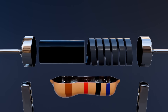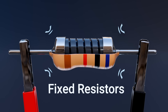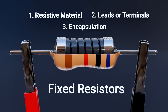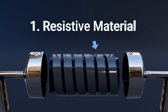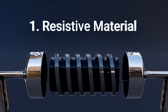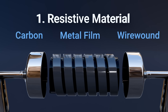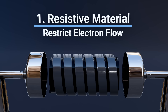Let's look at the parts of a resistor. Most common resistors you encounter are fixed resistors, which have three main components. Number one: resistive material. This is the core of the resistor and determines how much resistance it provides. It's made from materials like carbon, metal film, or wire-wound elements, each chosen for its ability to restrict electron flow.